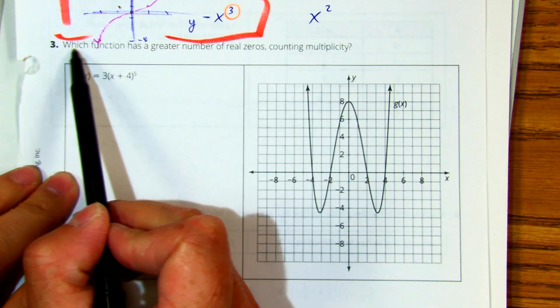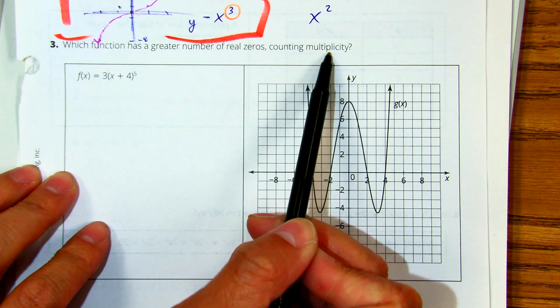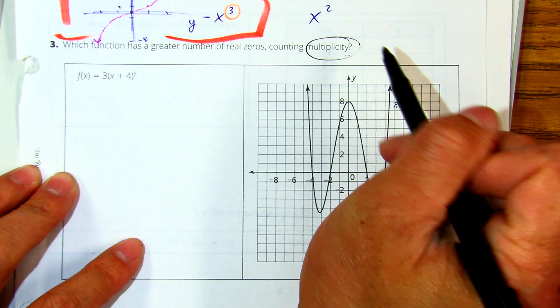Number three, which function has a greater number of real zeros counting multiplicity. So I'm going to circle that word. Multiplicity might be a hint to us. Let's look at the graph one first.